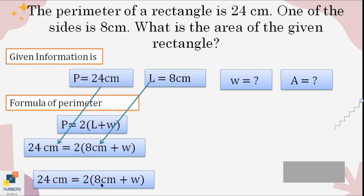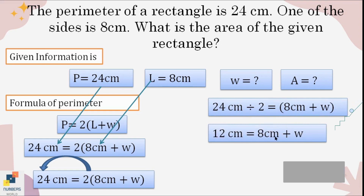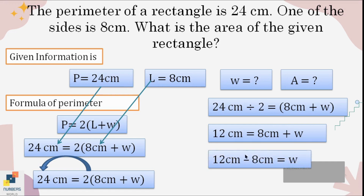We want to isolate W. Starting with the 2 outside the bracket — there is always an implied multiplication — we move it to the other side, changing it to division: 24 ÷ 2 = 12 centimeters. Now 8 is added with W, so we move 8 to the other side and the addition becomes subtraction: 12 − 8 = 4 centimeters, which is our missing width.